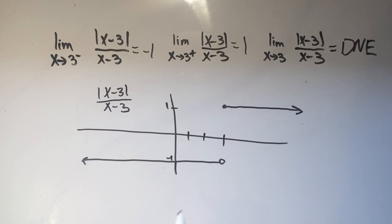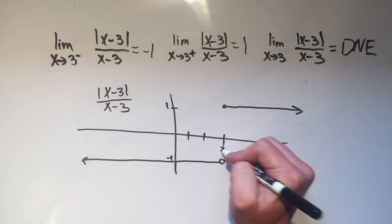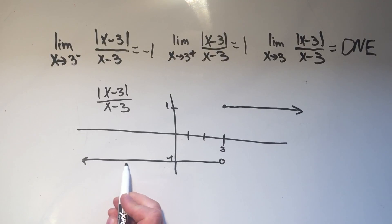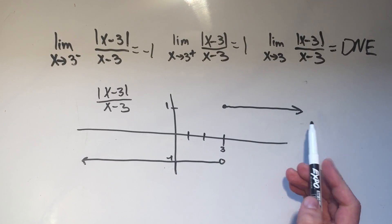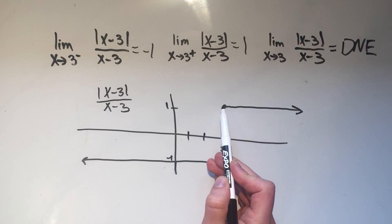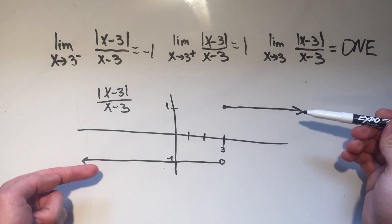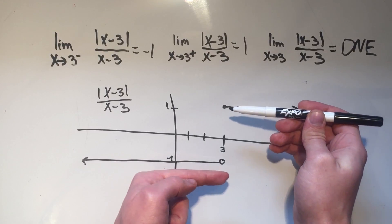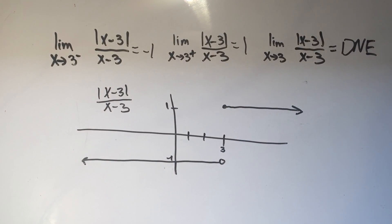So this sort of makes sense. If I'm approaching x equals 3 from the left, I'm negative one. And if I'm approaching 3 from the right, I'm positive one. But if I approach from both sides simultaneously, I end up at two different points, which means the limit does not exist.